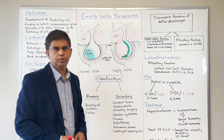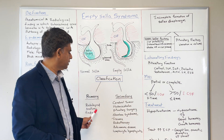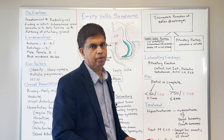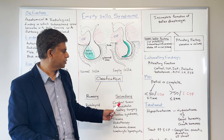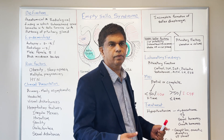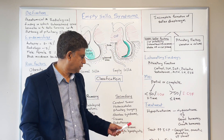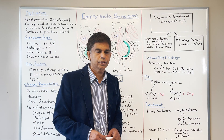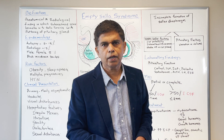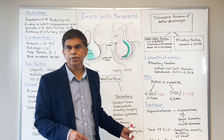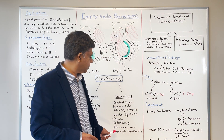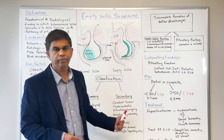You have to know the classification — there are two types: primary and secondary. Primary is again a radiological and anatomical finding. For secondary, there are many things to worry about: something happening in the pituitary gland, such as a cerebral tumor, hydrocephalus, pituitary surgery, Sheehan syndrome (which is hemorrhagic infarction of the pituitary gland), trauma, radiotherapy causing destruction of the pituitary gland, and autoimmune diseases like lymphocytic hypophysitis.